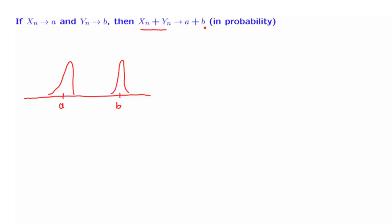So what are we saying? If Xn is very close to a with high probability and Yn is very close to b with high probability, then the sum will also be close to a plus b with high probability. This is the intuitive content of the statement. Now we want to establish this formally.